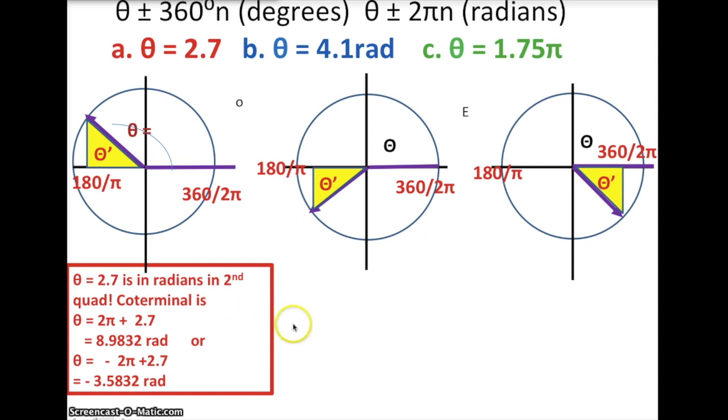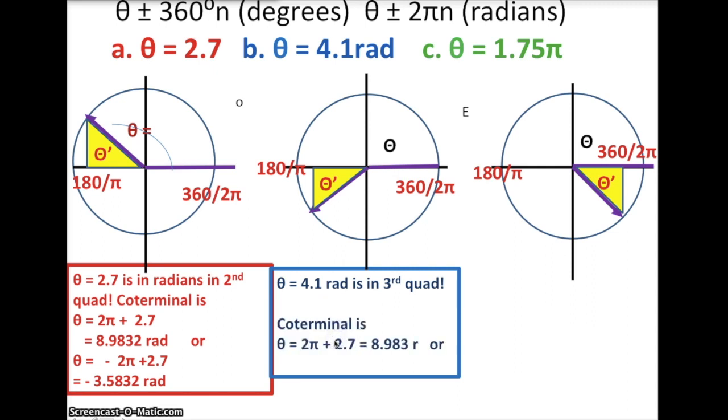Now if you need to stop at any time, hit the pause button. We have two more. One is 4.1 radians. That is a third quadrant. Four radians is over in here, right around in here. Slightly beyond that is this. We don't want to convert it into degrees. We want to just add 2π and subtract 2π.